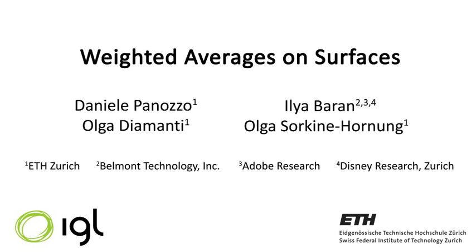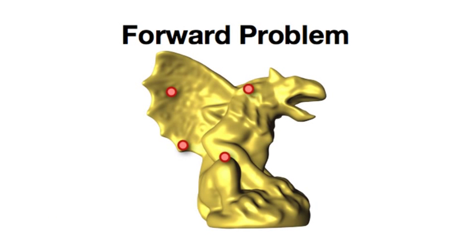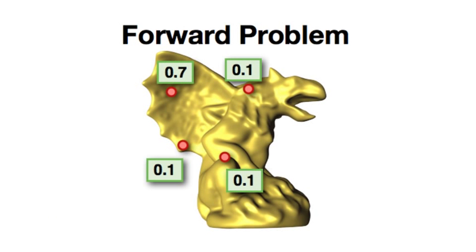We present a method for efficiently computing weighted averages of points on surfaces. Given a set of anchor points and corresponding weights, we find the point on the mesh that is the weighted average of the anchors with those weights. We refer to this problem as the forward problem.